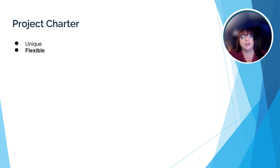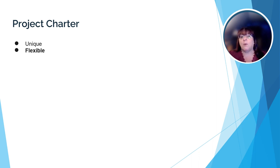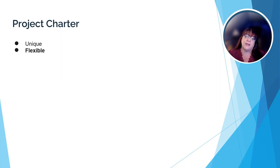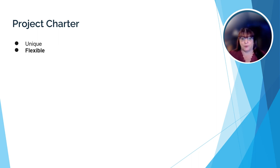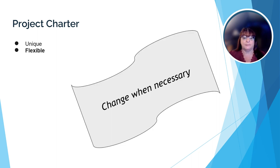Remember, the project team initially created the project charter based on what they think they know about the project — what tasks it will entail, what kind of schedule it will likely need, how much money it's going to cost. However, once they start actually working on the project, adding more detail and finding more information, the charter will change. The project charter should be kept up to date so the project manager and project team can keep track of scope creep, meaning the project going way off from its initial intent. So the project charter must change when necessary.